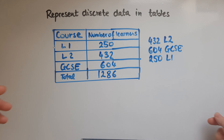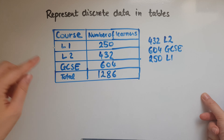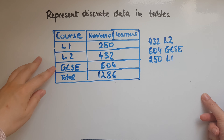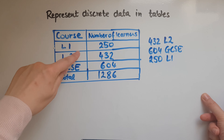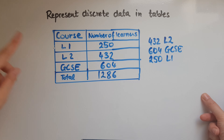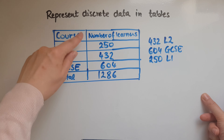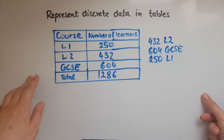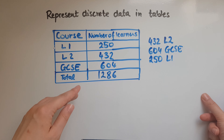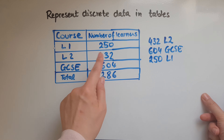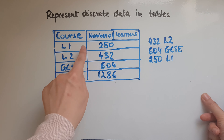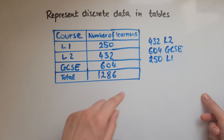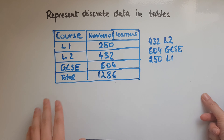It was important to line the numbers up correctly. We split the data into categories — whatever courses we offer — each within its own cell. The heading 'Course' covers all the course entries, and the second column heading is 'Number of Learners,' showing the count for each specific course. Finally, a totals row shows how many learners there are overall.